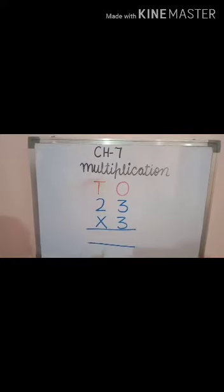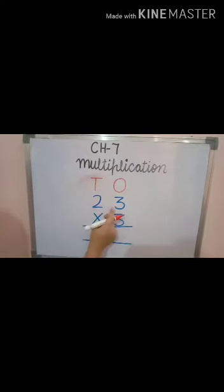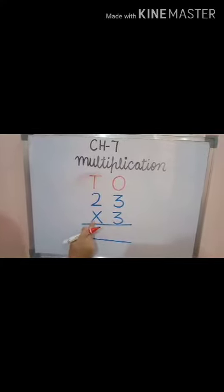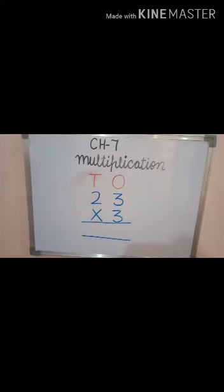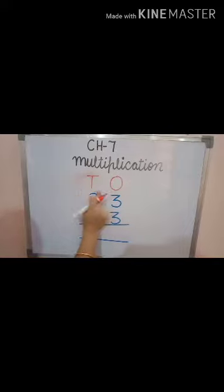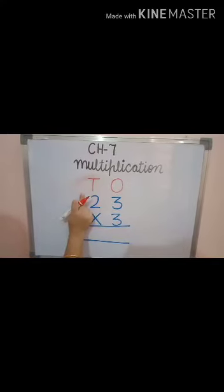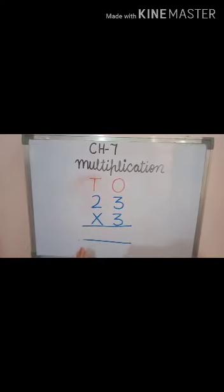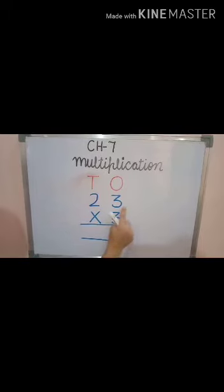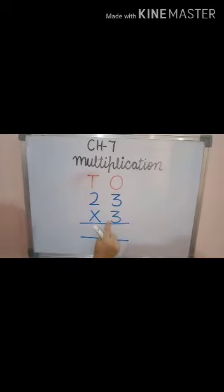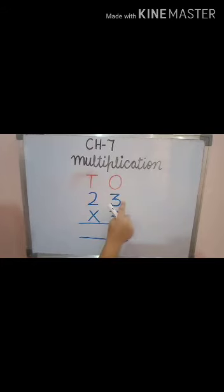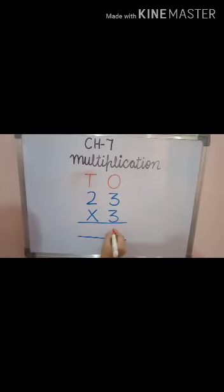Let's take another example: 23 multiplied by 3. In this multiplication, we go from right to left. So I start from the first digit, which is 3. 3 multiplied by 3 is 9.